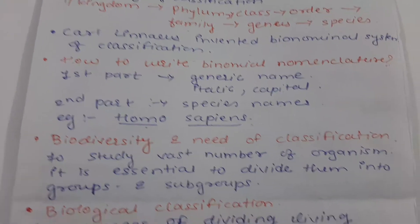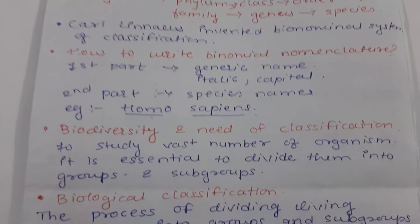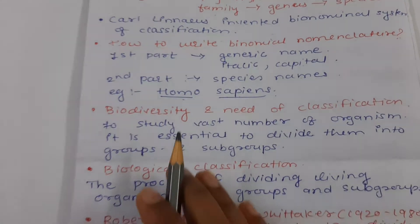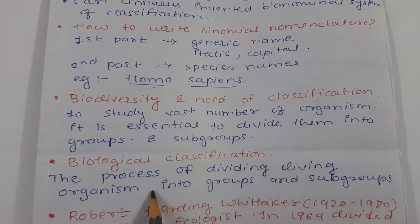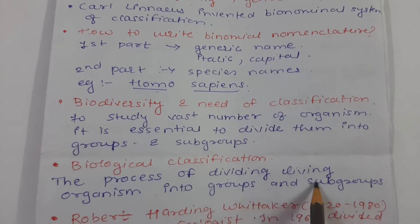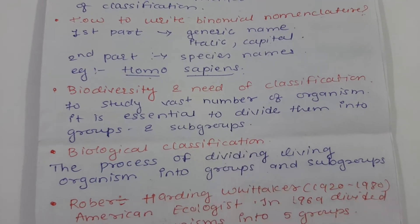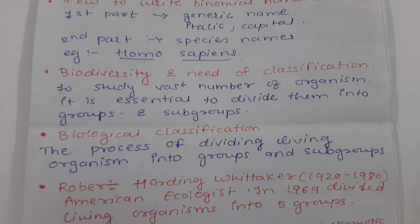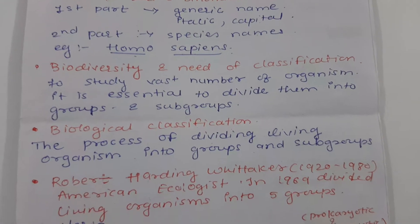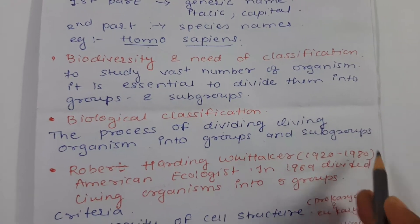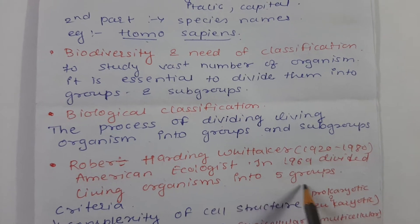Biodiversity refers to the variety of living organisms. The need for classification is to study the vast number of organisms by dividing them into groups and subgroups. Biological classification — the process of dividing living organisms into groups and subgroups — was significantly developed by Robert Harding Whittaker, an American ecologist, who in 1969 divided living organisms into five groups.